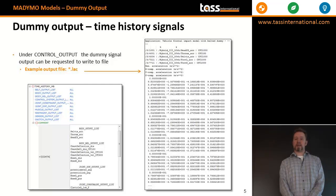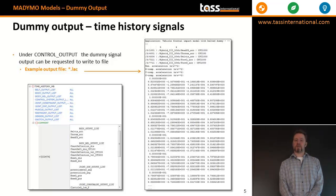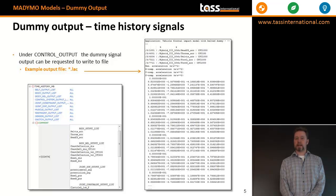All of the output that can be requested for a dummy is listed in the appropriate chapter of the model manual. Here we see an example of an output file. An acceleration output file will list for each time step four components of the five requested accelerometers.